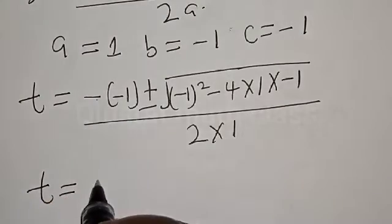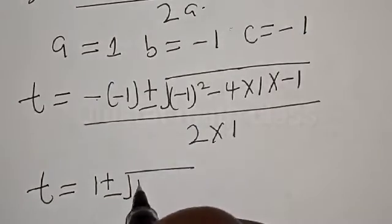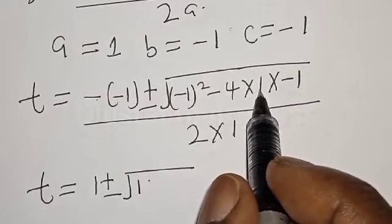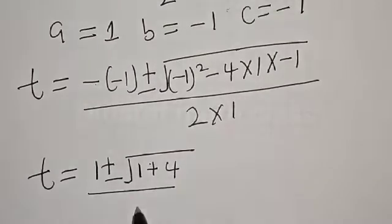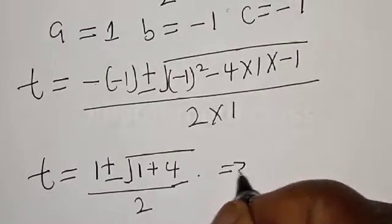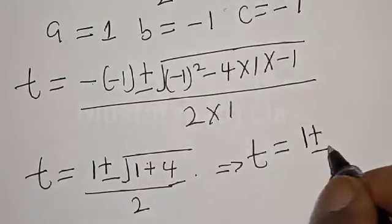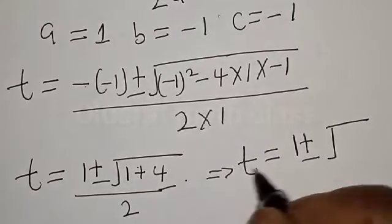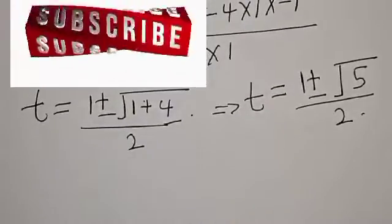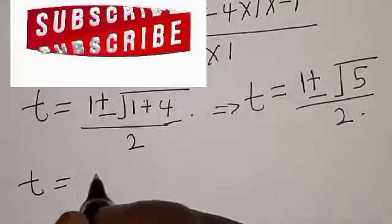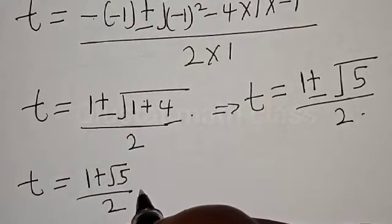Then we have minus times minus 1, that is plus 1, plus or minus square root of minus 1 squared, that is 1, then we have minus 4 times 1 times minus 1, that is plus 4, divided by 2. Then we have t is equal to 1 plus or minus square root of 1 plus 4, that is 5, divided by 2. Therefore we have t is equal to 1 plus square root of 5 divided by 2. This is the golden ratio.